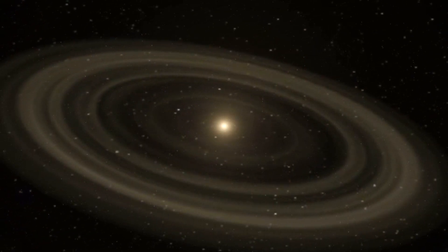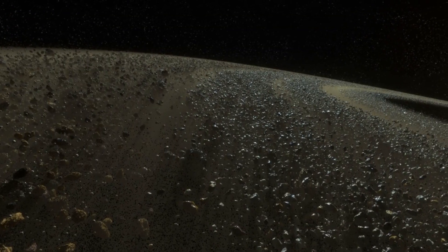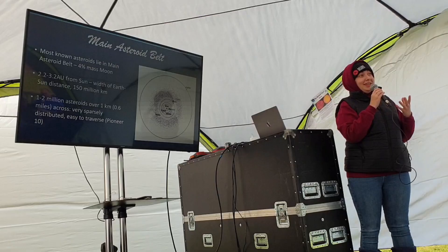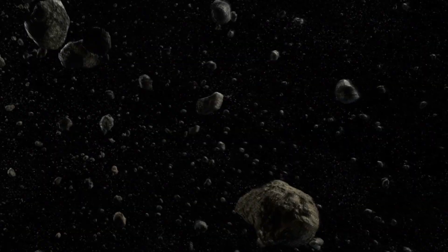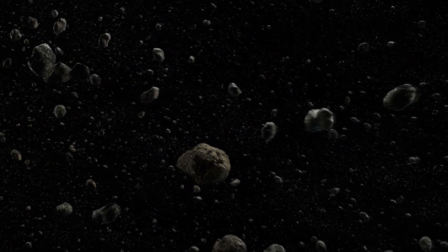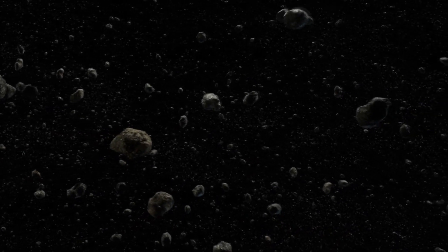Most of the known asteroids lie in the main asteroid belt. The amount of mass in the main asteroid belt is tiny — it's just a few percent of the mass of the moon. And yet there are between one and two million asteroids over one kilometer in diameter in the main asteroid belt. There are many hundreds of millions of smaller bodies in this main asteroid belt. Despite this, the main asteroid belt is very, very easy to traverse.